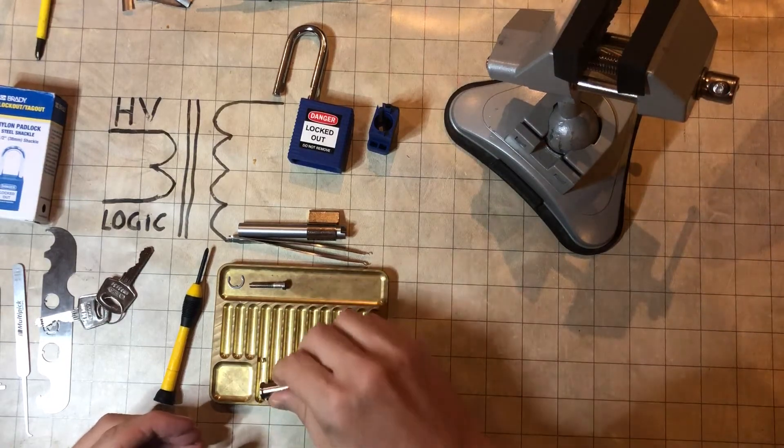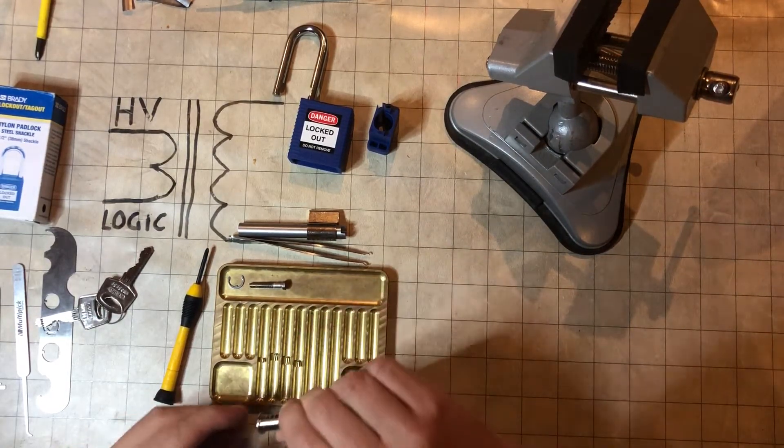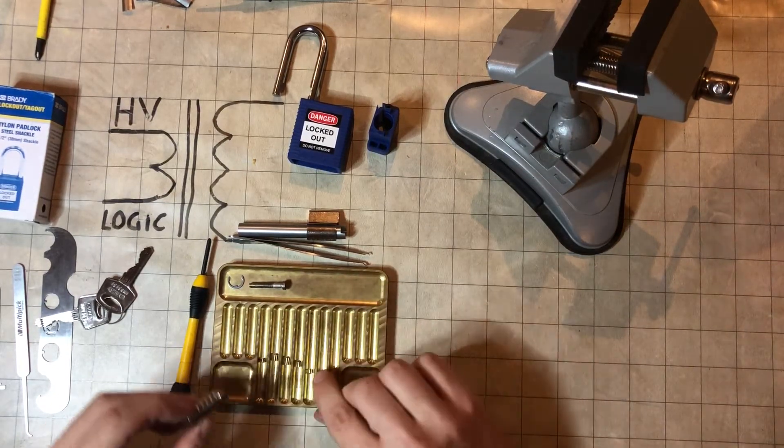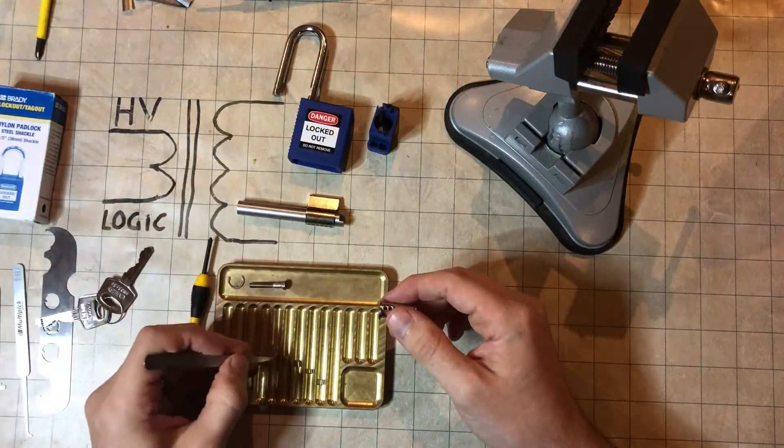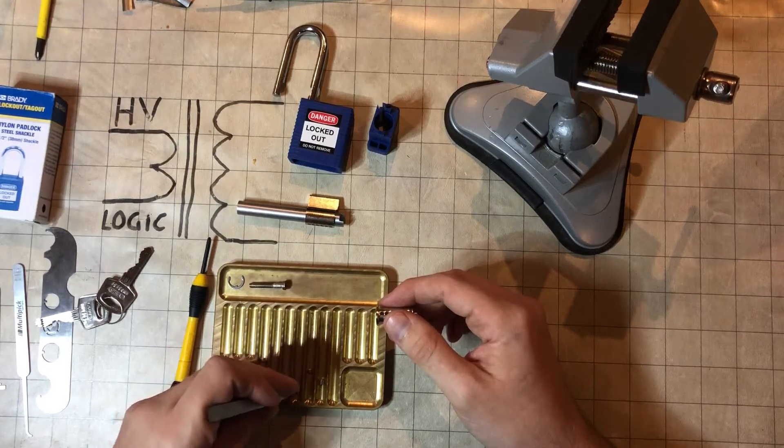So one, two, three, four, five, and six. So they're all standard, no security, no serrations going on those, which is sort of typical for most lotto locks.